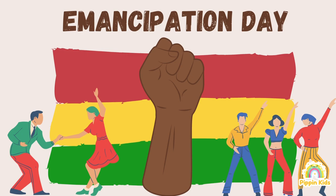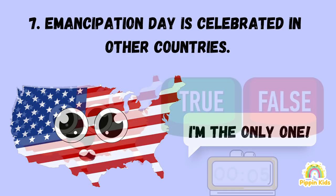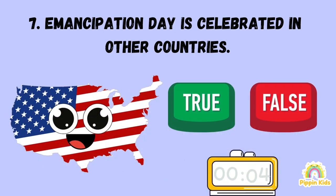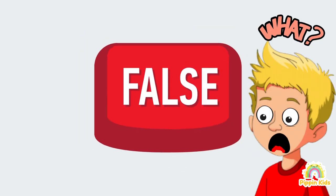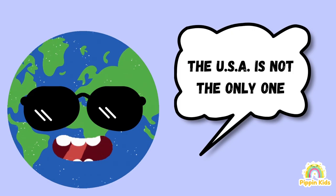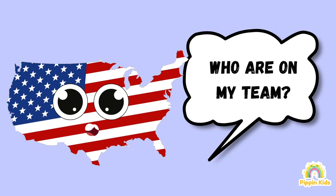Number seven: Emancipation Day is celebrated in other countries as well, including Jamaica, Barbados, and Trinidad and Tobago. In those countries, it is celebrated on August 1st to mark the end of slavery in the European colonies in the Caribbean.